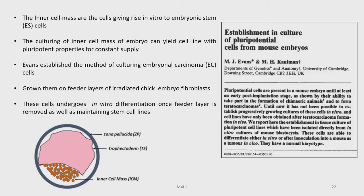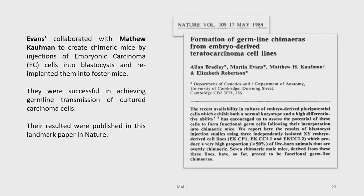The culturing of the inner cell mass of an embryo can yield a cell line with pluripotent properties for a constant supply. Evans established the method of culturing embryonal carcinoma cells by growing them on feeder layers of irradiated SIM embryo fibroblasts. These cells undergo in vitro differentiation once the feeder layer is removed, while also maintaining stem cell lines. He published this work under the title 'Establishment in Culture of Pluripotent Cells from Mouse Embryo.'